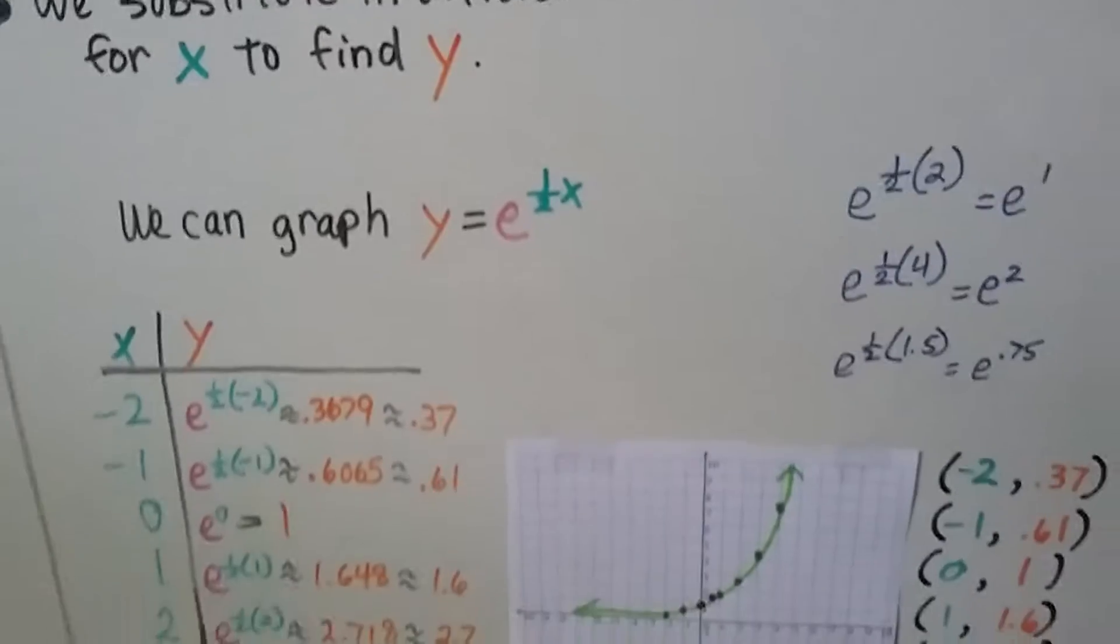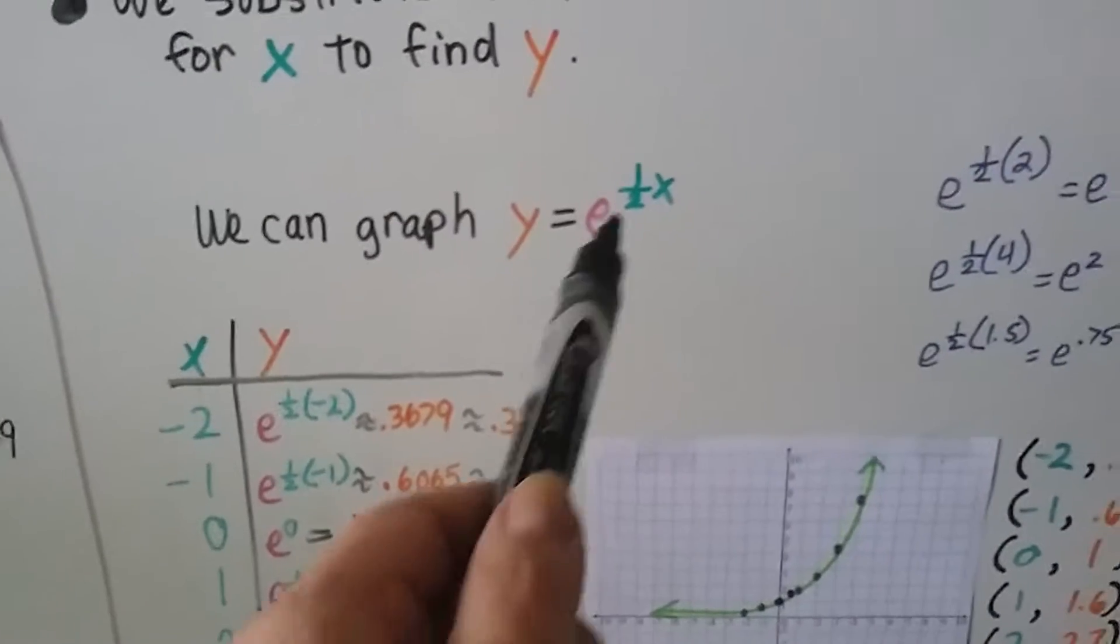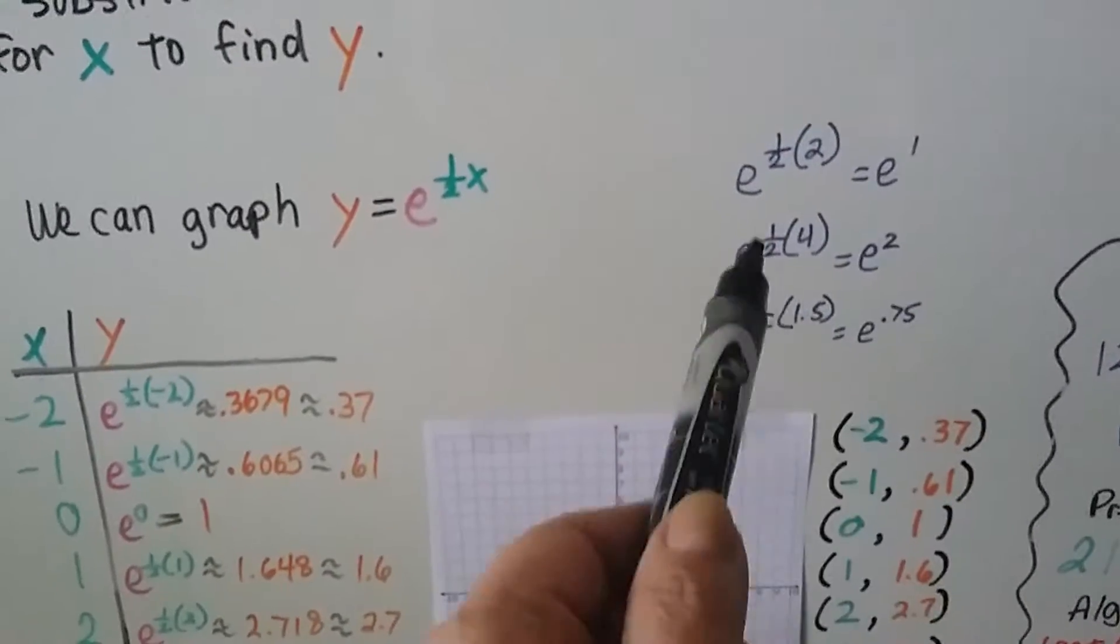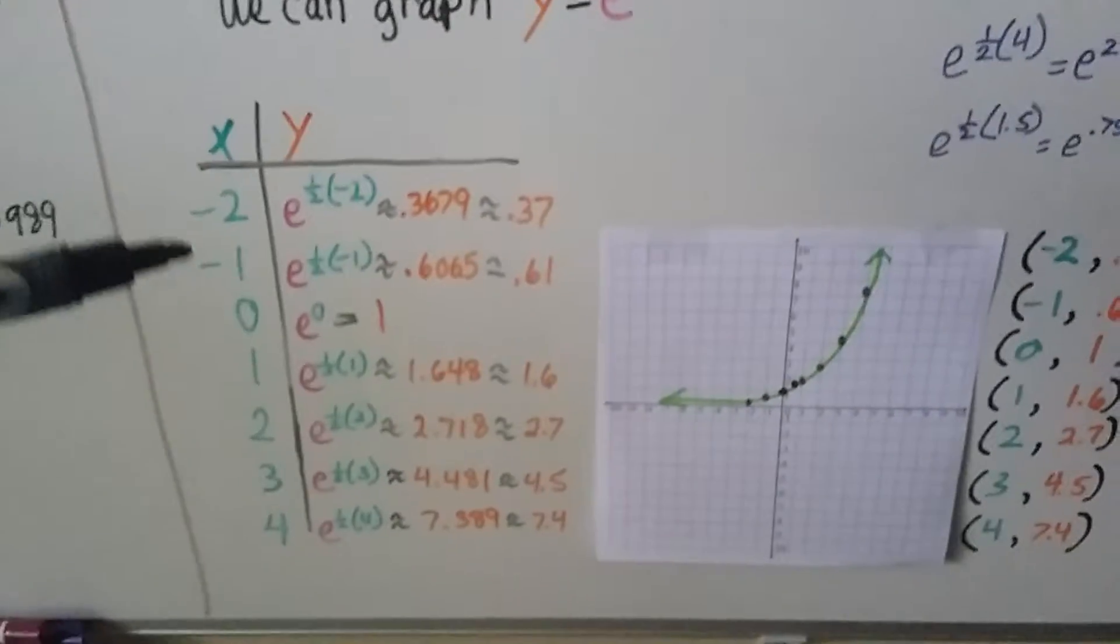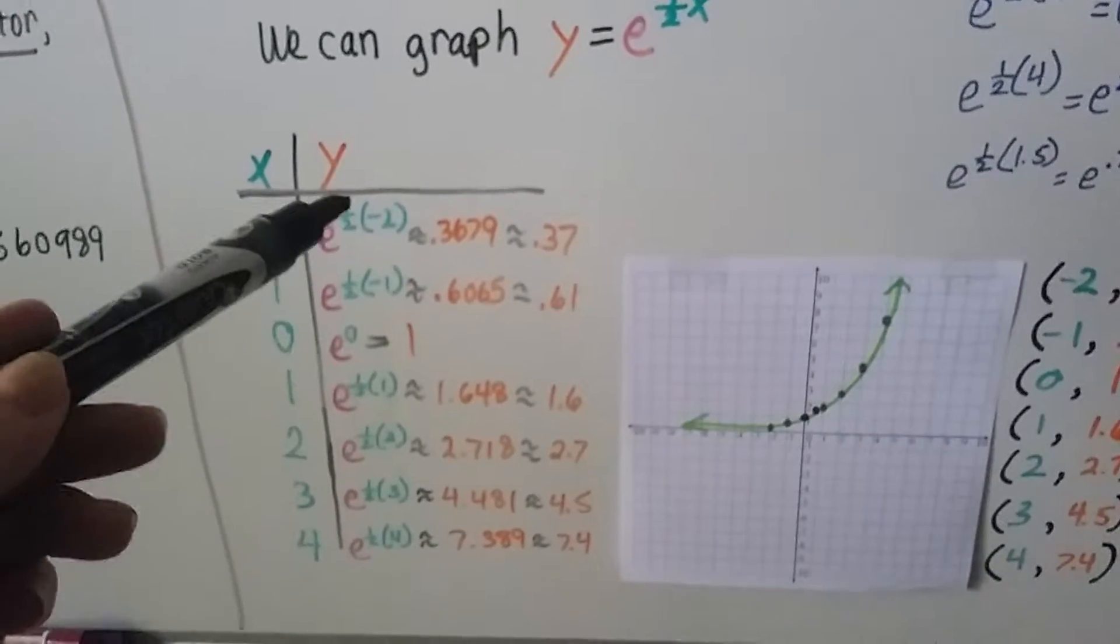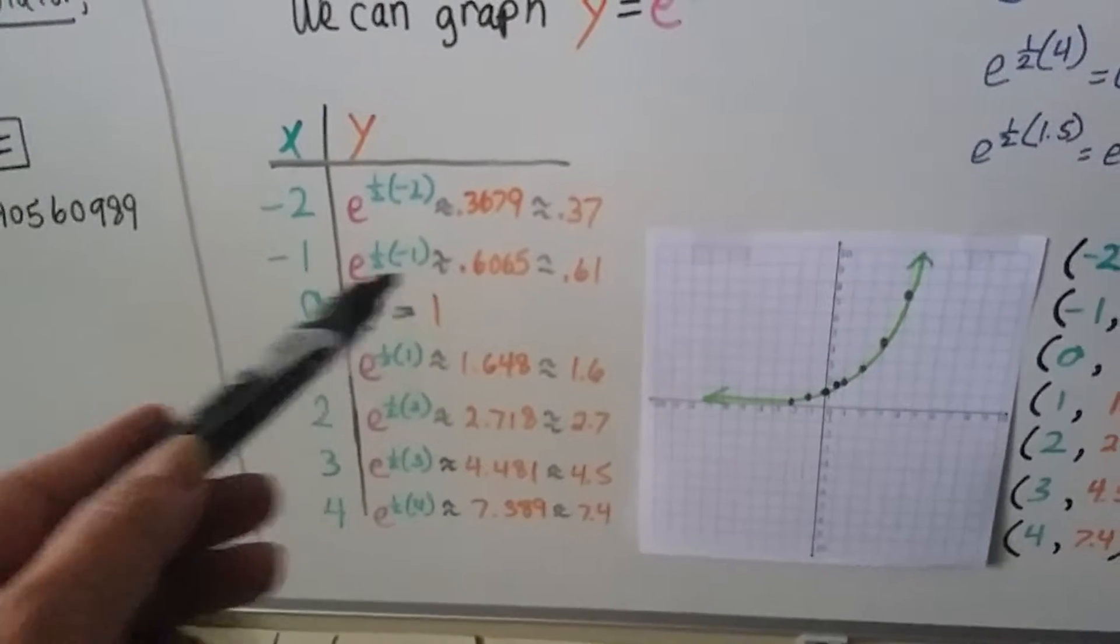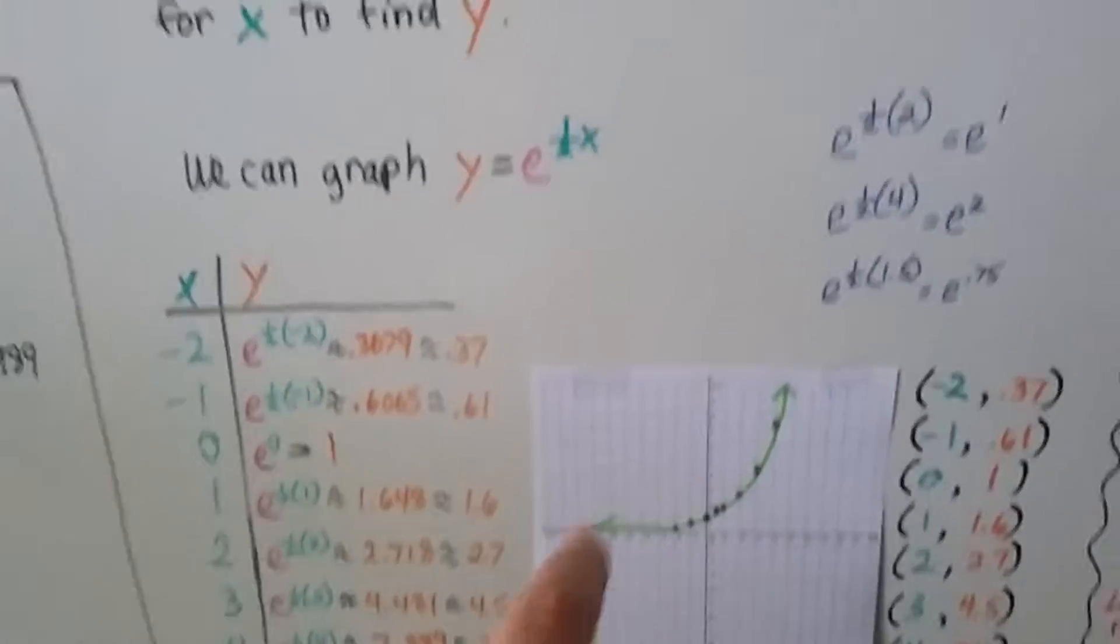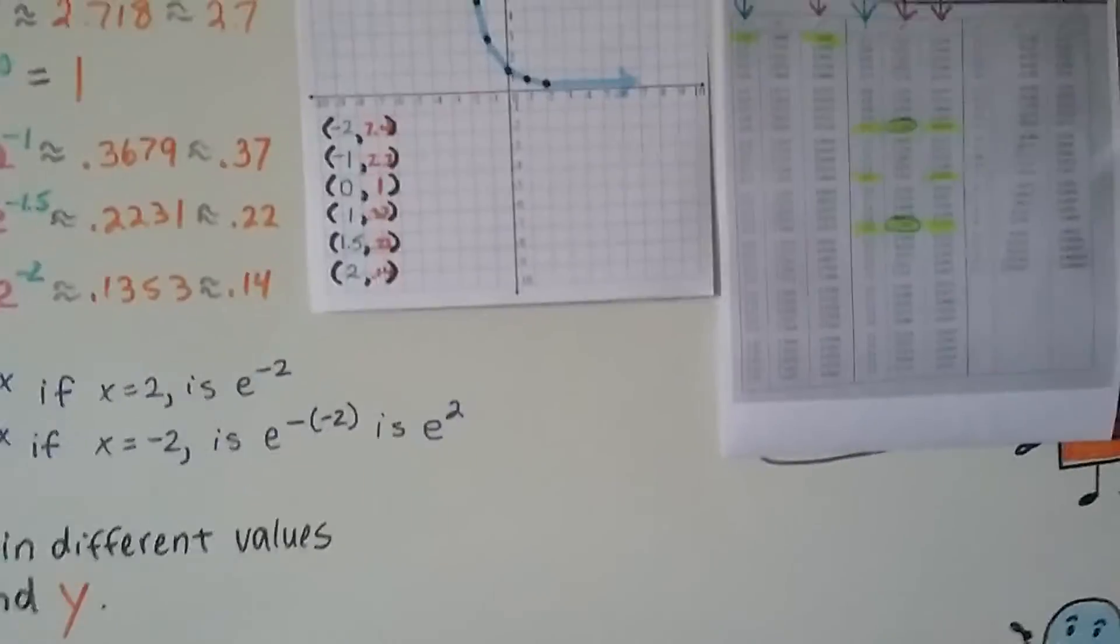We substitute in different values for x to find y. We can even graph y equals e to the half x. All that means is we're multiplying whatever x is by half. If it was half of 2, then it would be a 1. If it was half of a 4, it would be a 2. If it was half of 1.5, it would be 0.75. We can use this and put in our values and say, it's half of a negative 2, half of a negative 1. That's just going to be 1, because you can't get half a 0. Half of 1 would be a 0.5, and then we would look it up on the table according to that value.